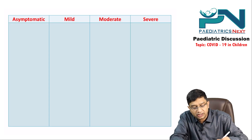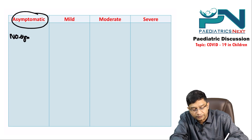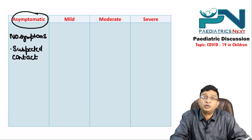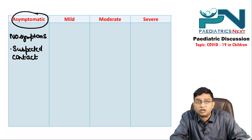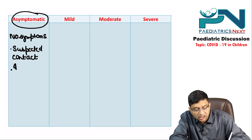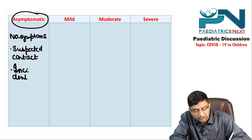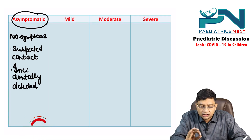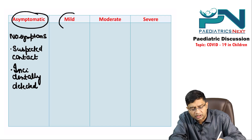Asymptomatic, as the name indicates, means there are no symptoms. Either the child was a suspected contact of a COVID-positive person and tested positive, or the child was incidentally detected but has no symptoms present.